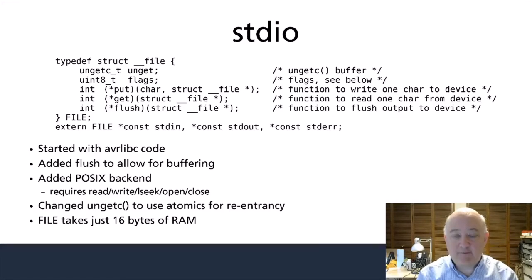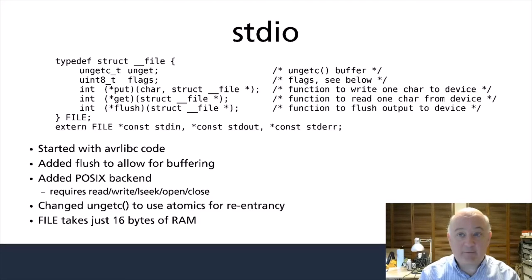PicoLibC inherits its standard I/O from AVRLibc. This code uses a small in-RAM struct to hold per-file state. PicoLibC's standard I/O is built on two primitive operations: get a character and put a character. Any file struct includes pointers to functions which do just that. This means implementing I/O for another system involves implementing just these two functions, not a large set of POSIX APIs. To make PicoLibC's standard I/O re-entrant without requiring locking, the un-get field is manipulated with atomic operations. Standard in, standard out, and standard error are global pointers to file structs, declared const so that they may be placed in ROM.